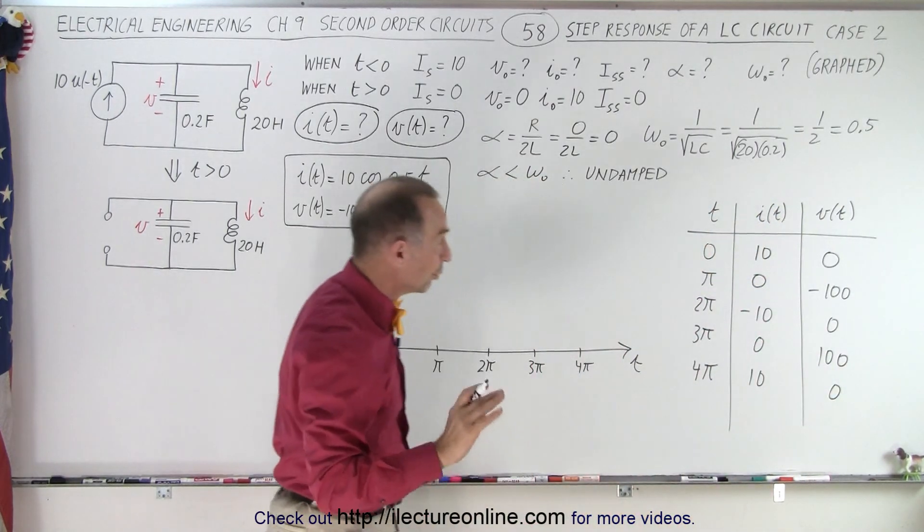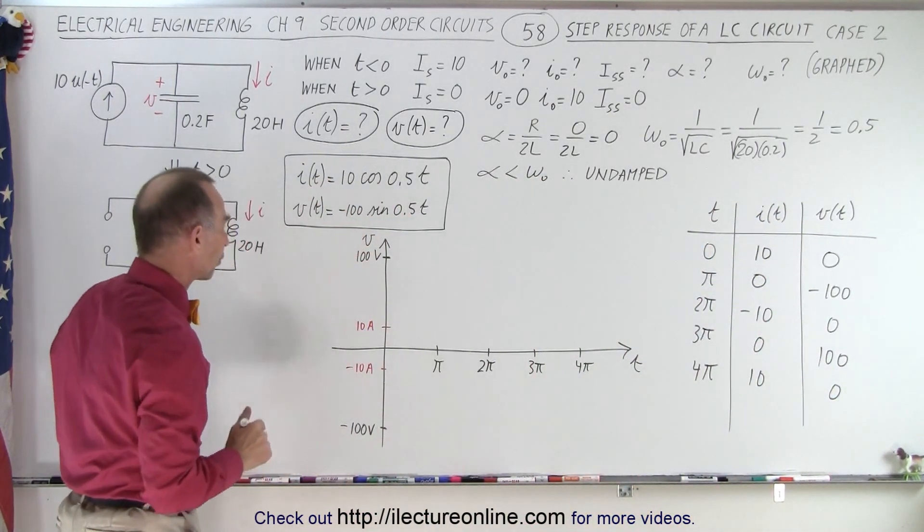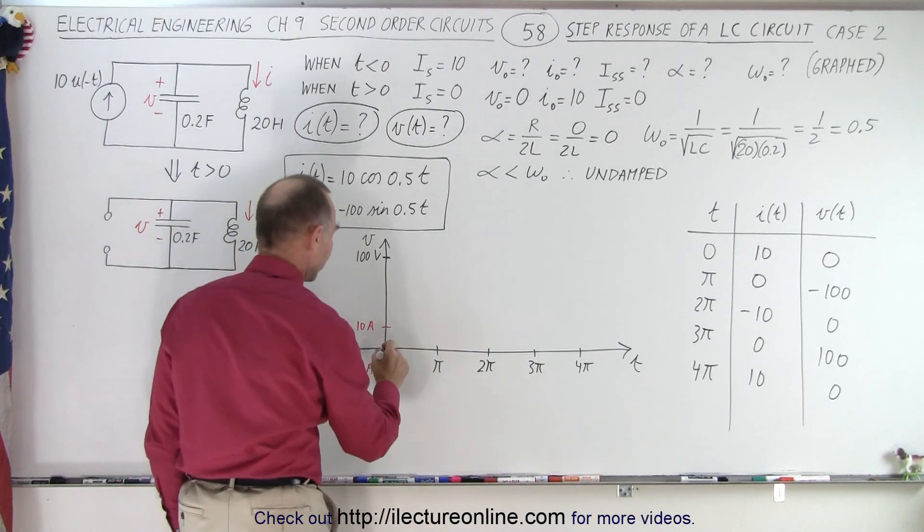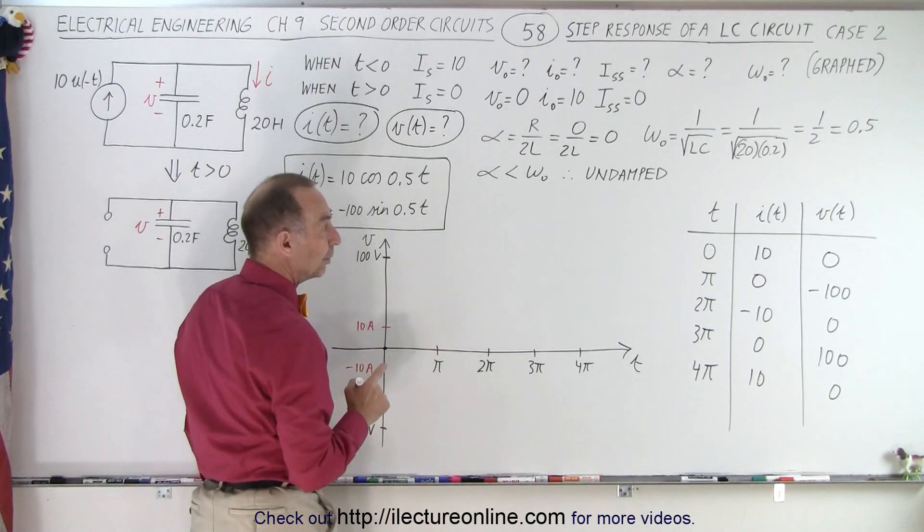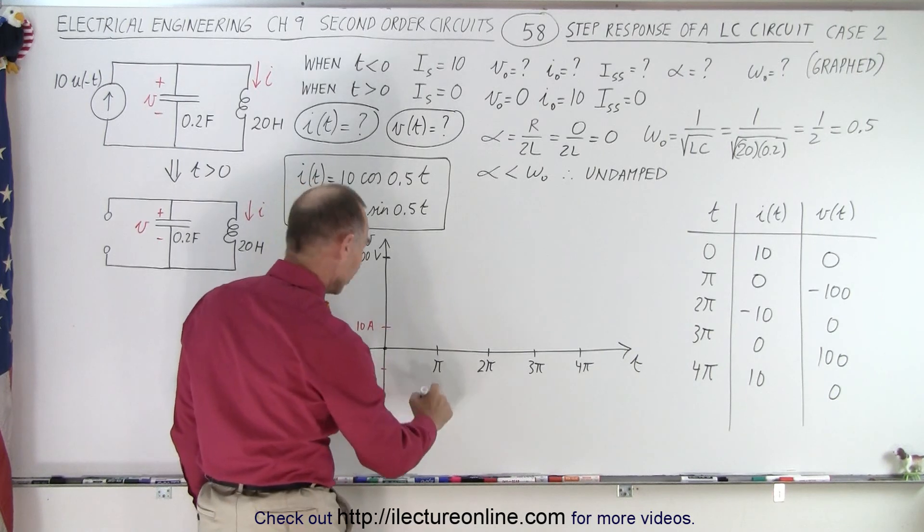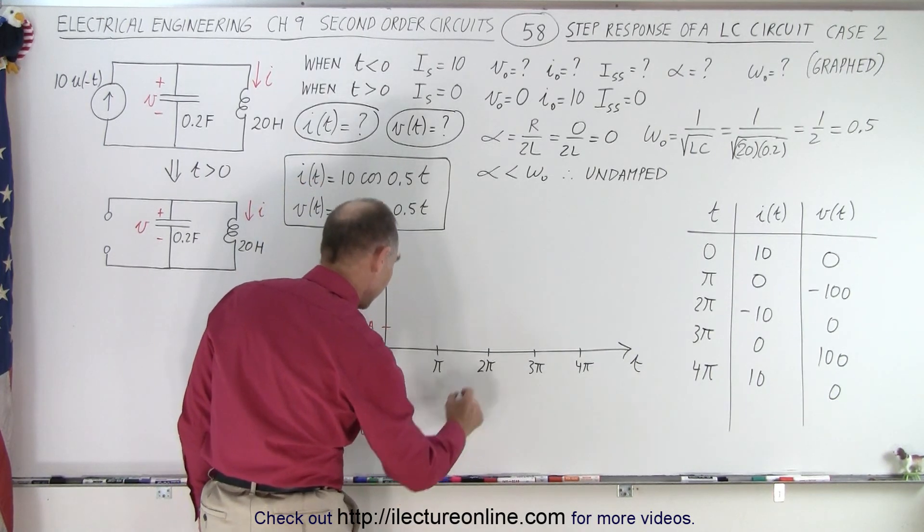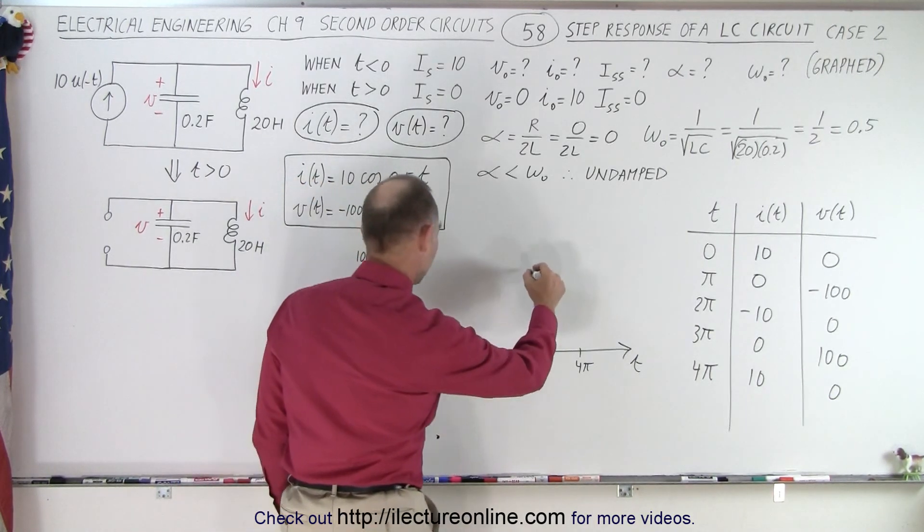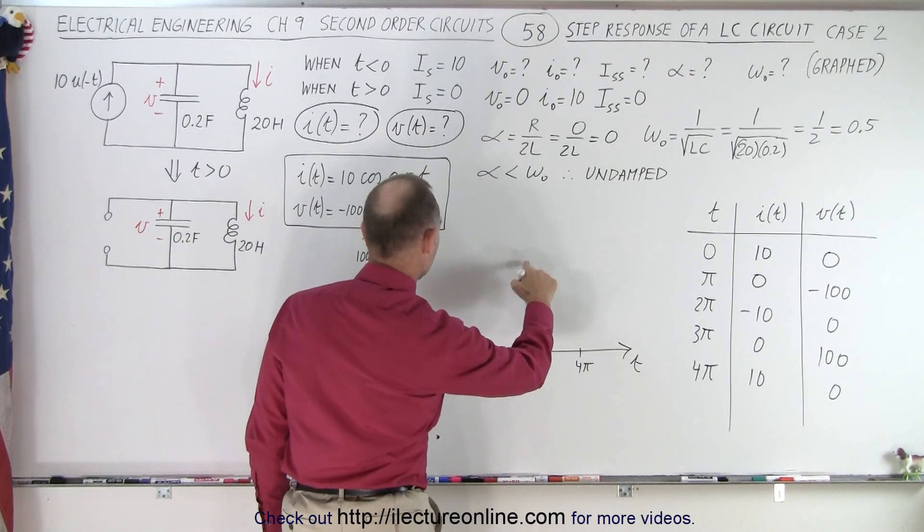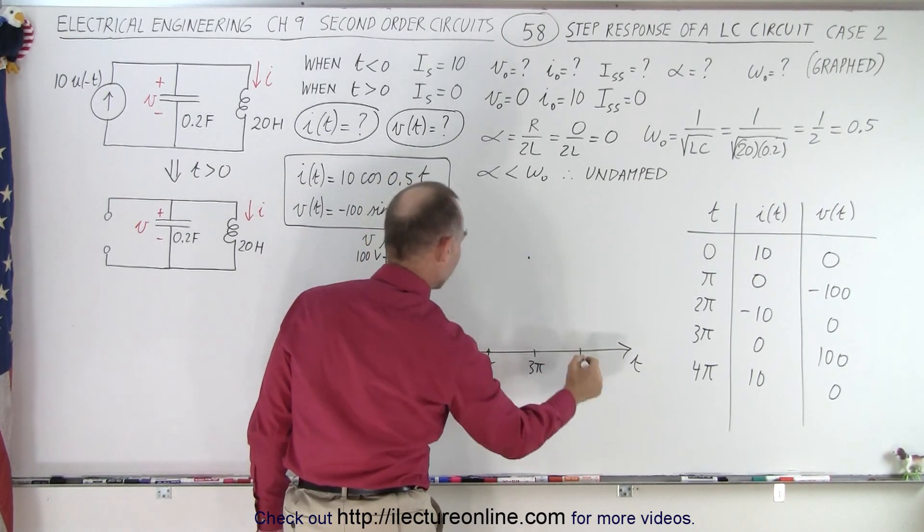So now let's go ahead and graph the voltage, and then graph the current. So we start out with time equals 0, the voltage is 0. Then with time equals π, the voltage is negative 100. Then back to 0, then positive 100, a little higher, there we go, and then back to 0.